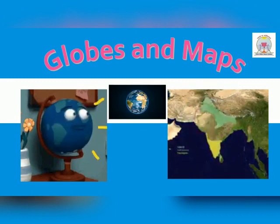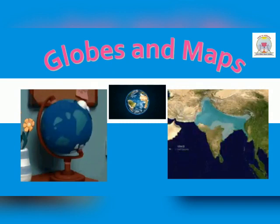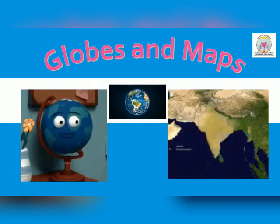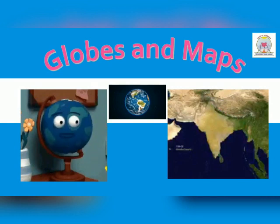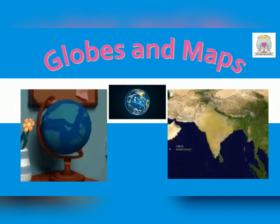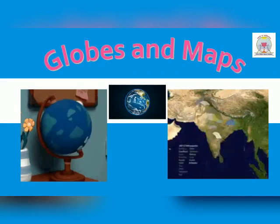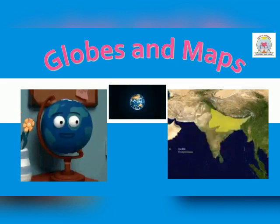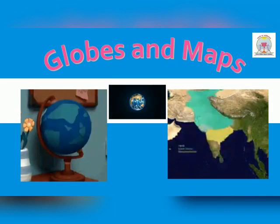The Earth is not a perfect round shape. It is shaped like an orange, slightly flattened at the top and bottom and a bulging middle. It is a unique planet, also known as the blue planet. To study the Earth, we need a proper map or a globe.